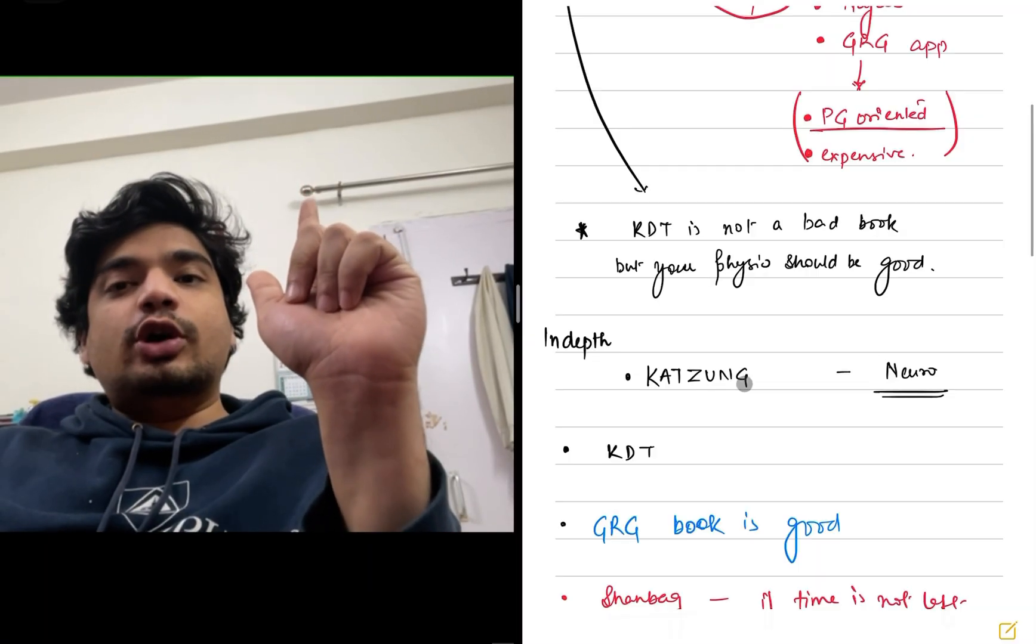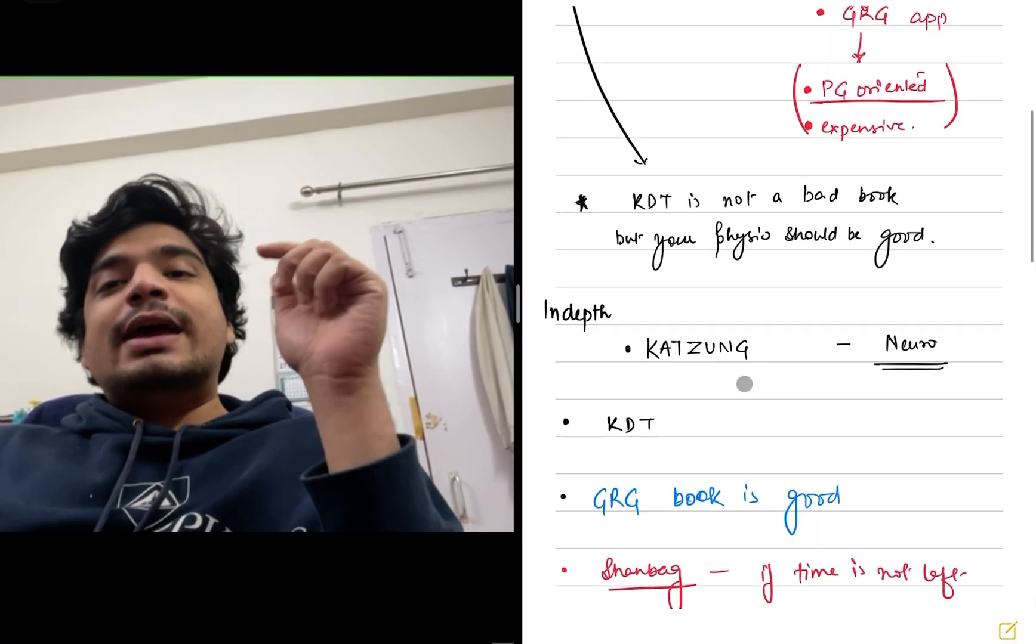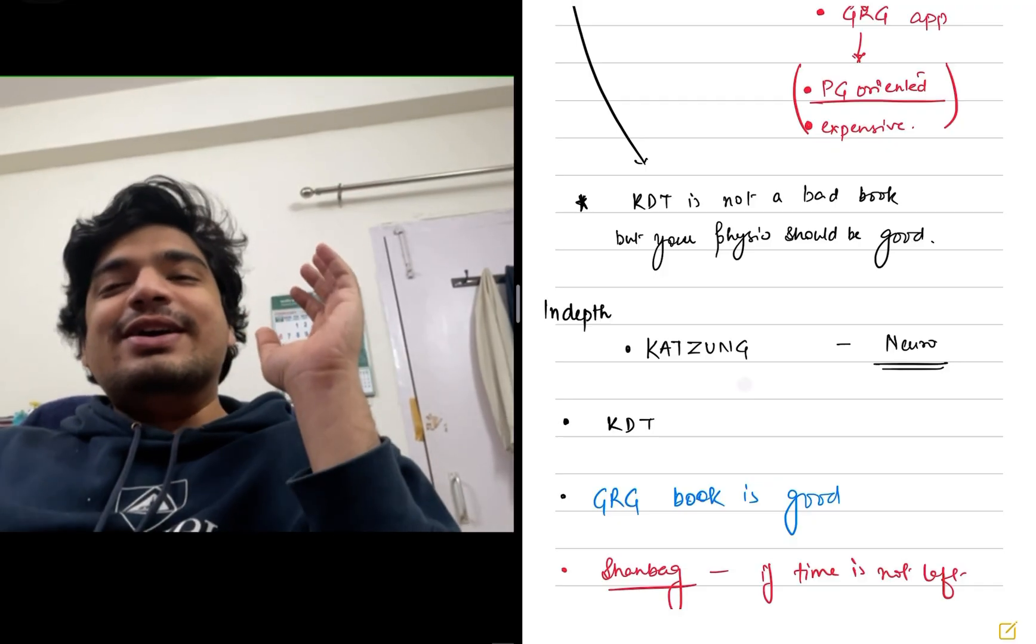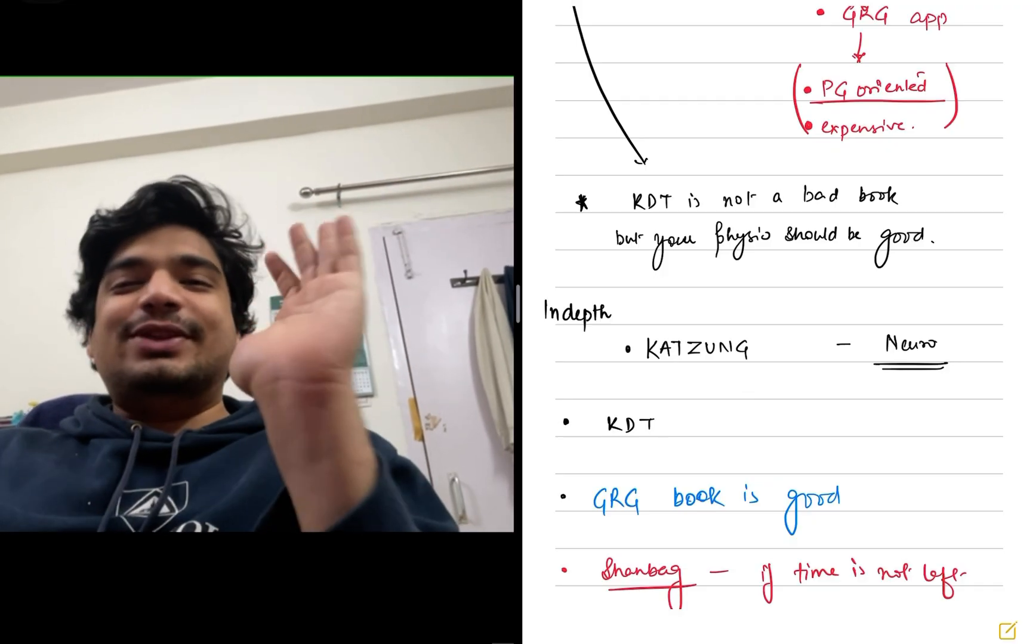So my thing is KDT is good for an Indian scenario. GRG, the review of pharmacology by Dr. GRG again is a good book. And last but definitely not the least Shanbhag comes into the picture when you are short on time and just want to memorize for the part of exam.